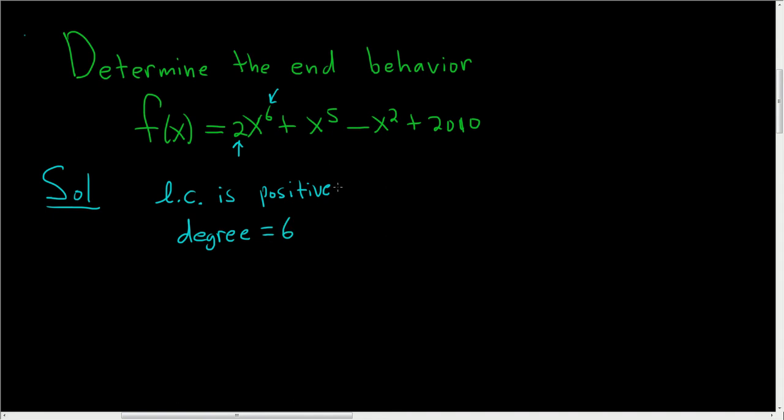So we have a positive leading coefficient and an even degree. What is the simplest function you can think of that has a positive leading coefficient and even degree? Well, x squared.